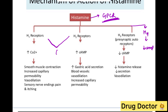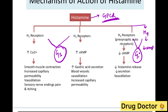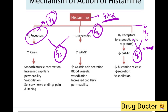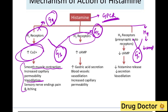H1 and H2 are stimulatory type receptors; H3 and H4 are inhibitory type. H1 is Gq type and H2 is Gs type. Gq functions through IP3/DAG pathway, increasing calcium levels, causing smooth muscle contractions and vasodilatation. H2 receptors work through the stimulatory type, increasing cyclic AMP, causing vasodilatation, and most importantly increasing gastric acid secretion.